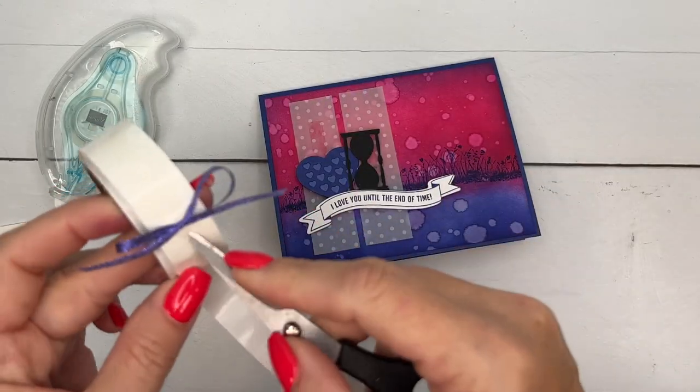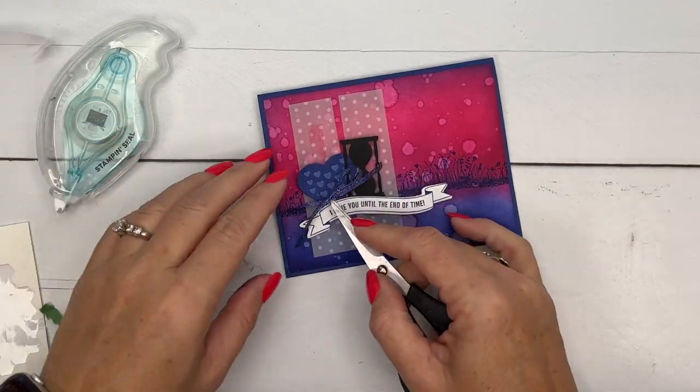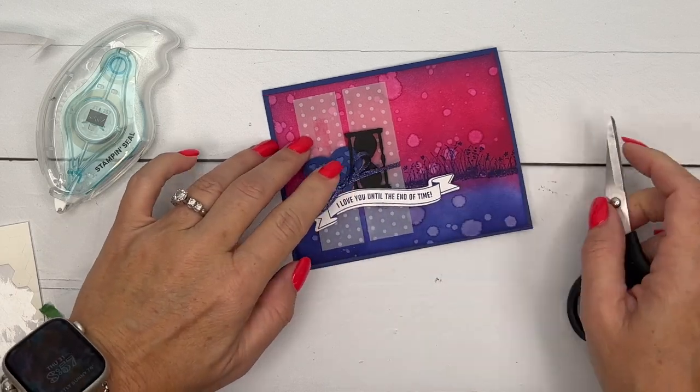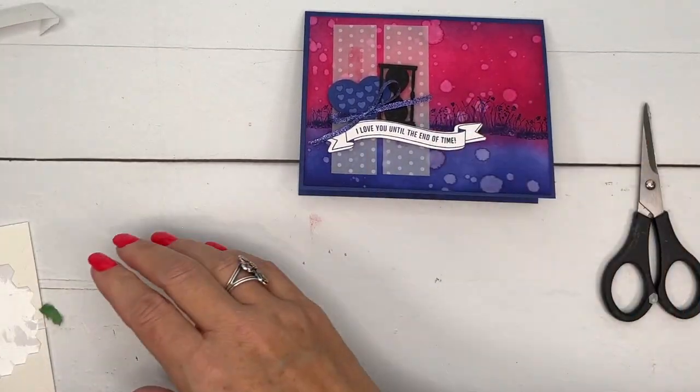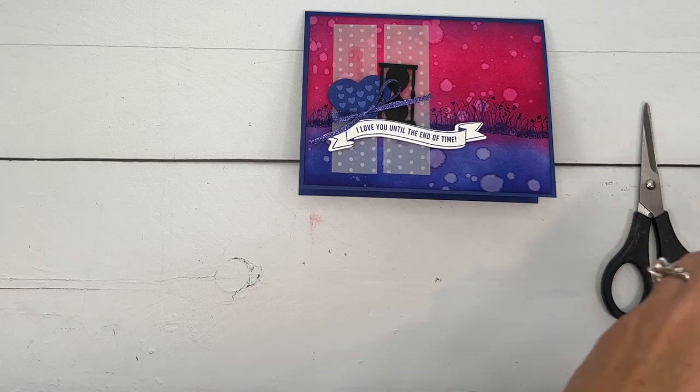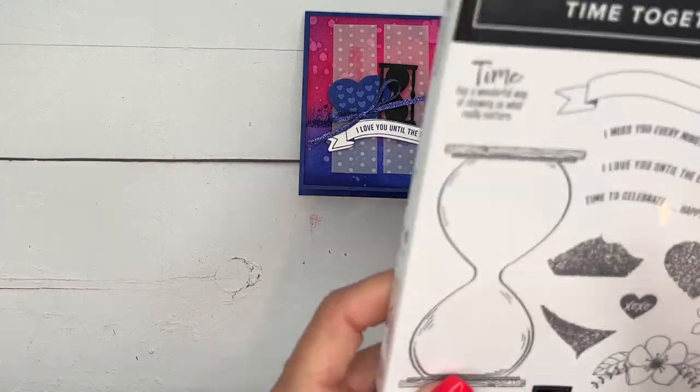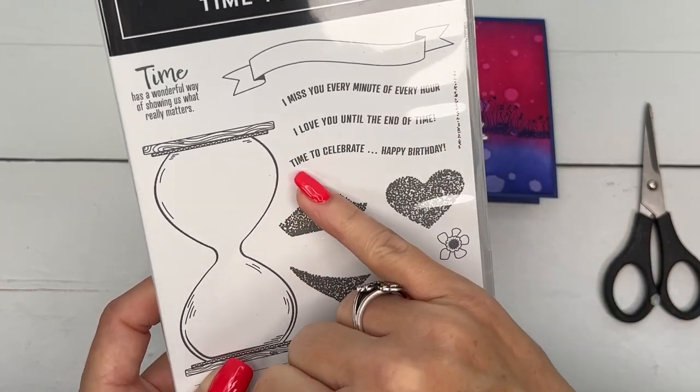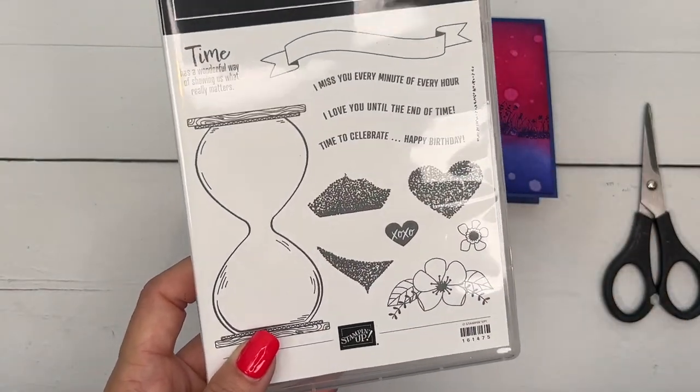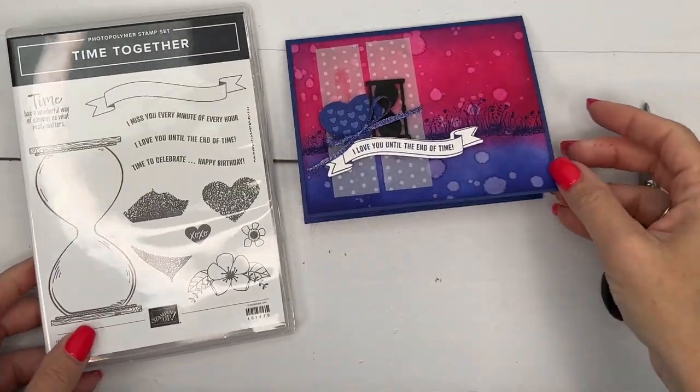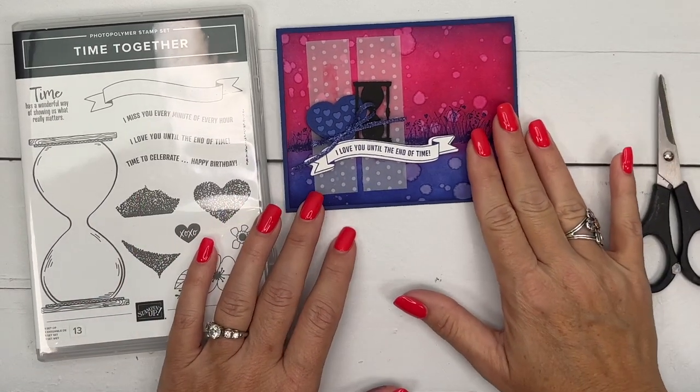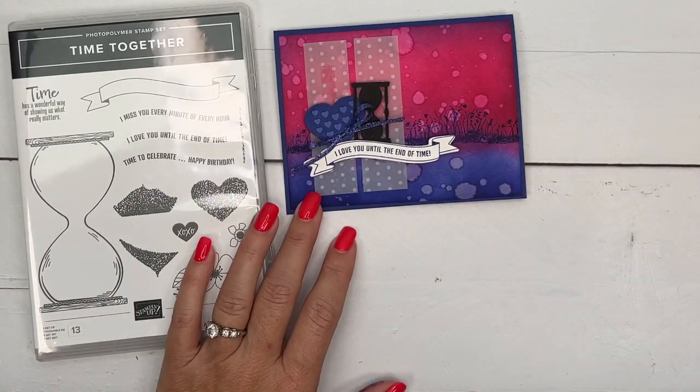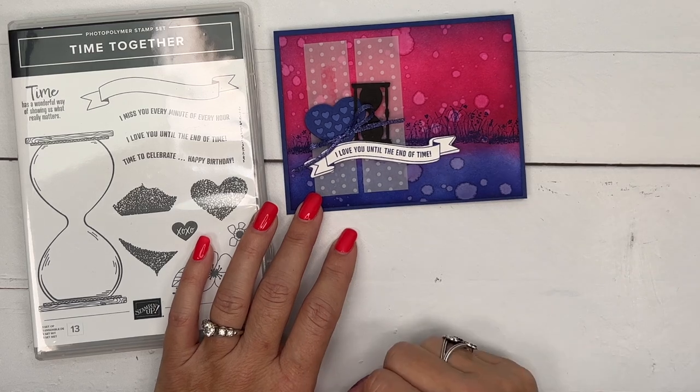Now, if you don't need a card that says, I'll love you till the end of time, don't worry. There are other sentiments in this stamp set that will work. I miss you every minute of every hour and time to celebrate happy birthday. Everybody could use that. And there you go, you guys, that's it. Isn't that a gorgeous card? Huge wow factor and relatively pretty easy.